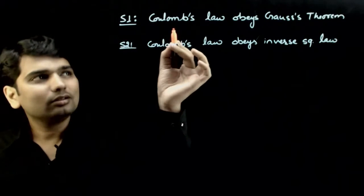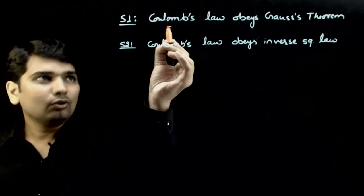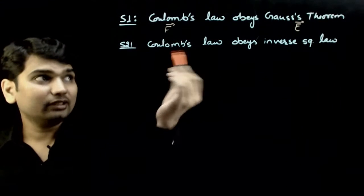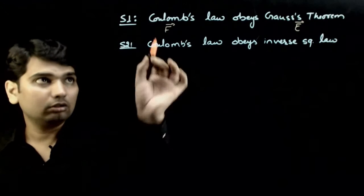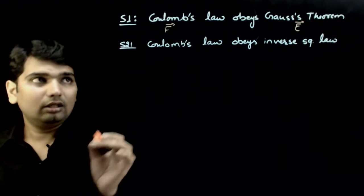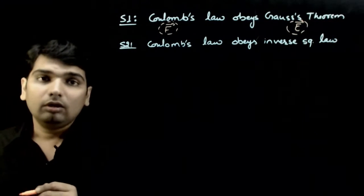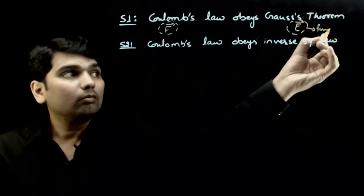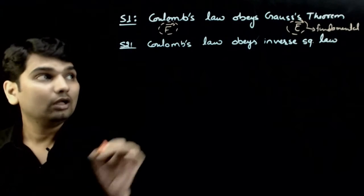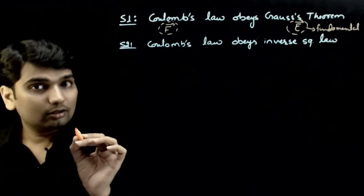How do we say that Coulomb's law is more basic, or Gauss's theorem is more basic? Coulomb's law talks about force, and Gauss's theorem talks about electric field. How do we say that Gauss's theorem is the consequence? It turns out that electric field is more fundamental than force.